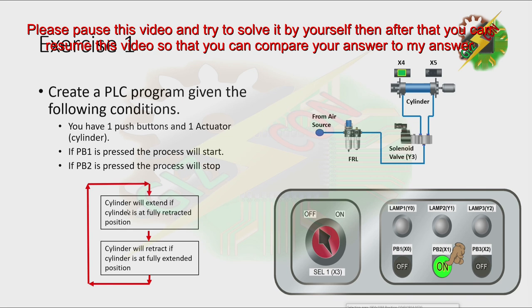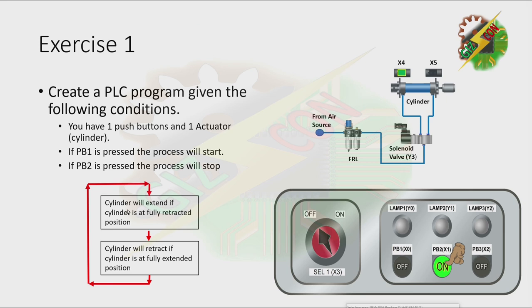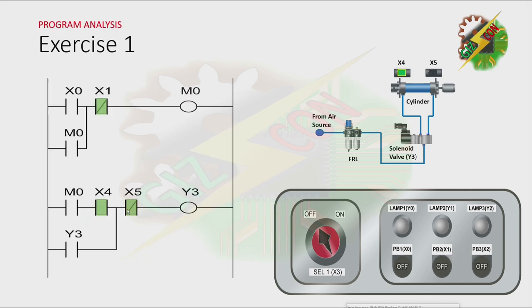Let's continue. This will be my answer to this problem. Let's have our program analysis. As you can see here, when we energize X0, that will make M0 to turn on.